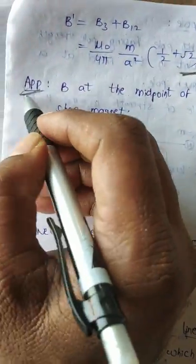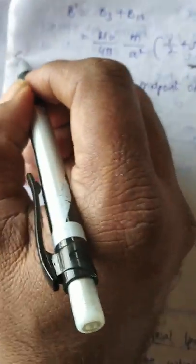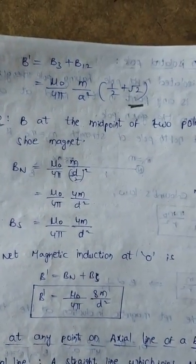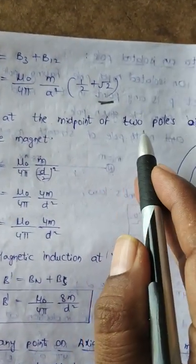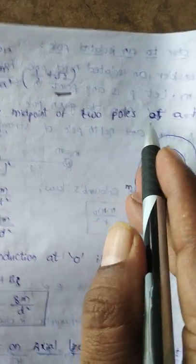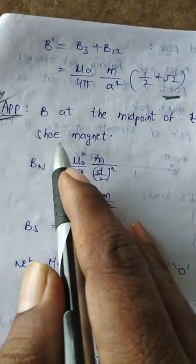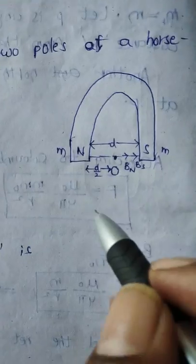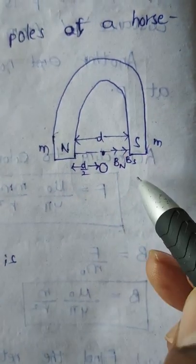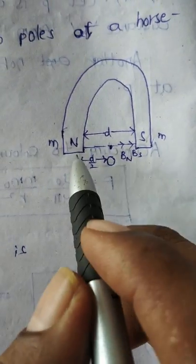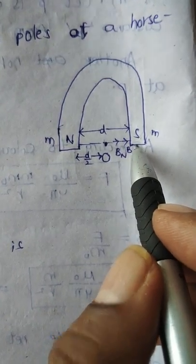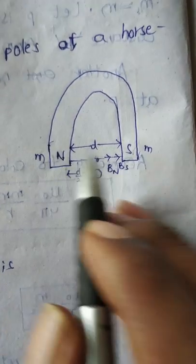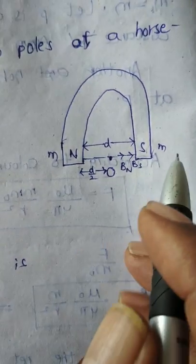There is one more application or example. Find the value of magnetic induction B at the midpoint of two poles of a horseshoe magnet. This is the shape of a horseshoe magnet — it has a north pole and a south pole. The separation between the north and south poles is D, and both poles have the same strength M.